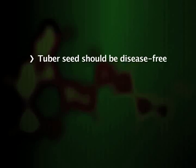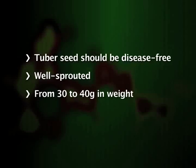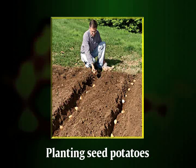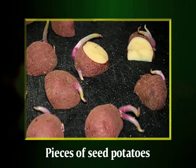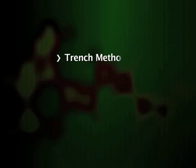After land preparation, planting is done. The potato crop is usually grown not from seed but from seed potatoes, which are small tubers or pieces of tubers sown to a depth of 5 to 10 centimeters. Tuber seed should be disease-free, well-sprouted and from 30 to 40 grams each in weight. The planting density depends on the size of tubers; usually about two tons of seed potatoes are sown per hectare. Seed potatoes can be planted whole or cut into pieces, but each piece should contain at least one eye. In cold climates potatoes are planted in mid to late spring, while in warm climates planting is done in late summer or late winter.